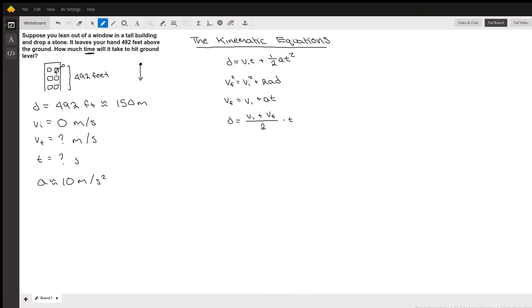This question says suppose you lean out of a window in a tall building and drop a stone. It leaves your hand 492 feet above the ground. How much time will it take to hit ground level?